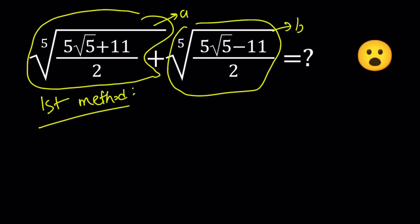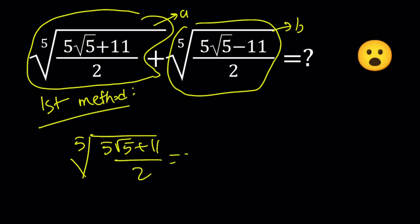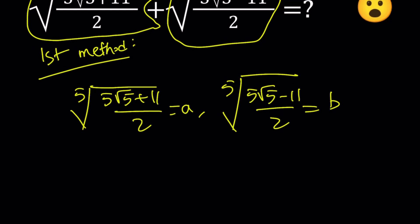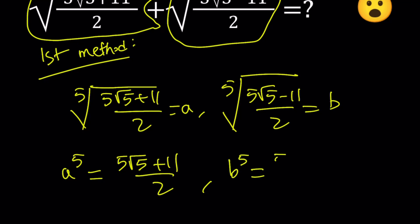So according to my assumption, the fifth root of (5√5 + 11)/2 is equal to a, and the fifth root of (5√5 - 11)/2 is equal to b. Now if we raise both sides to the fifth power for both a and b, we get a⁵ = (5√5 + 11)/2 and b⁵ = (5√5 - 11)/2.